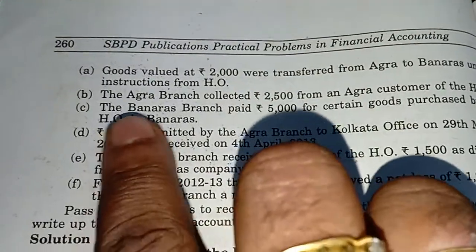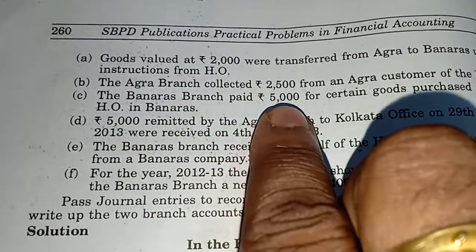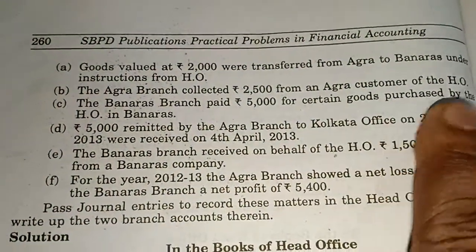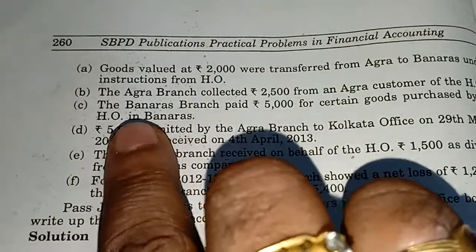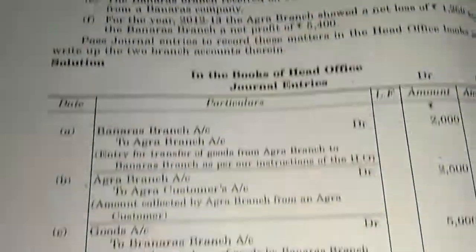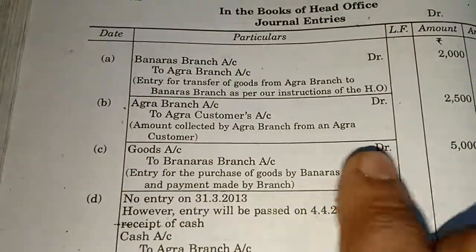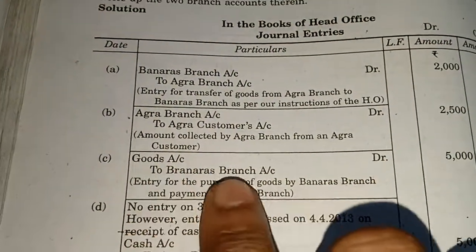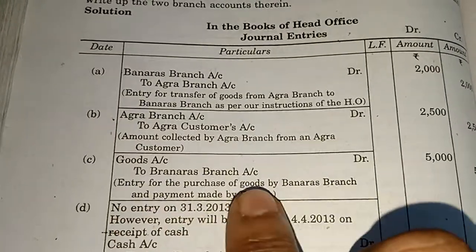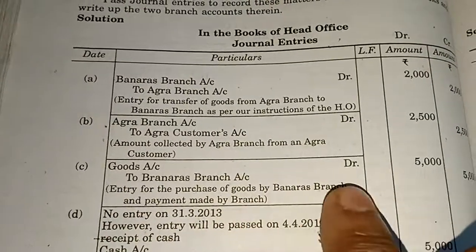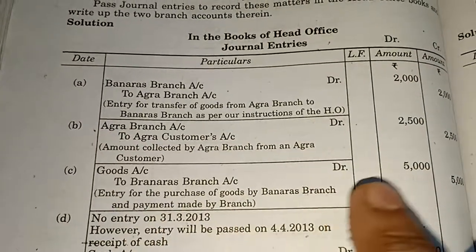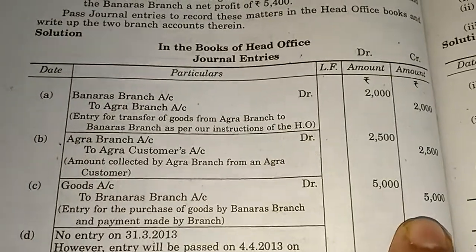The Banaras branch paid Rs. 5000 for certain goods purchased by the head office in Banaras. The general entry will be: Goods account debit to Banaras branch account. Entry for purchase of goods by Banaras branch and payment made by branch, Rs. 5000.